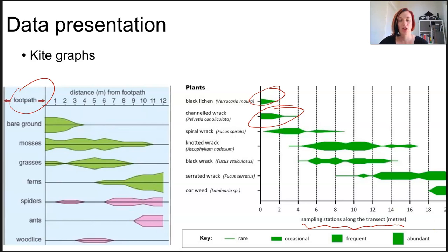For example, in this first diagram, this x-axis here is obviously distance from the footpath, and then the width of the shape is the relative abundance there. Same thing for plants. Distance along the transects and the abundance at the various locations.